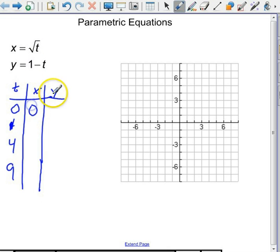So the square root of 0 is 0 and 1 minus 0 is 1. So at t equals 0, our first point is (0,1). And then at t equals 1, square root of 1 is 1, and 1 minus 1 is 0. So my second point goes right there.